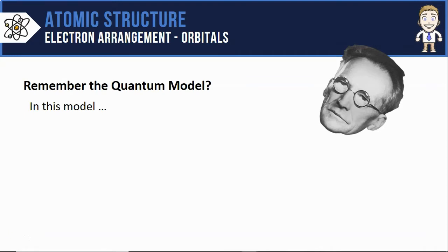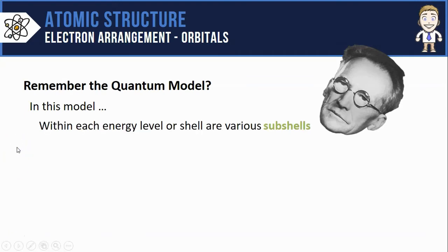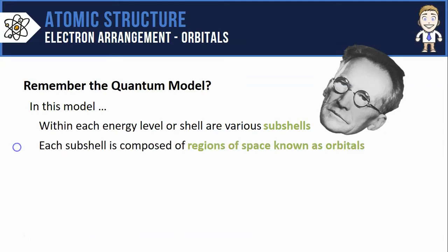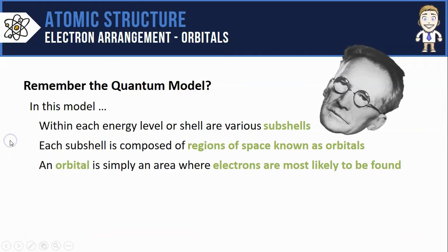So remember from the last video we learned about the quantum mechanical model of the atom where there's energy levels or shells all made of various sub-shells or sub-levels. Each of these sub-shells is then composed of regions of space known as orbitals and those orbitals are simply areas where electrons are most likely to be found.